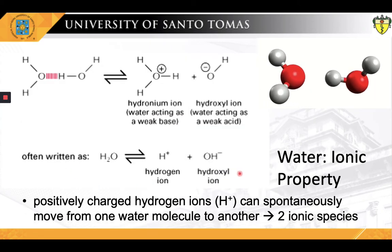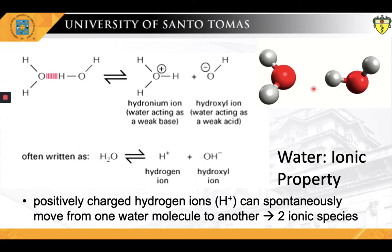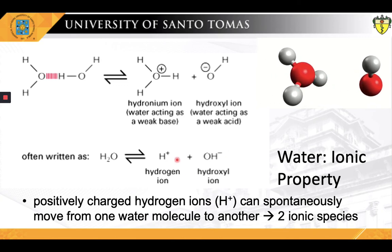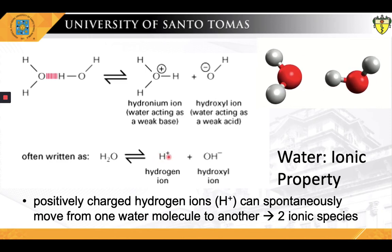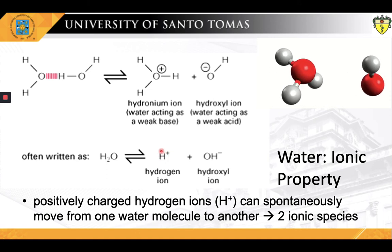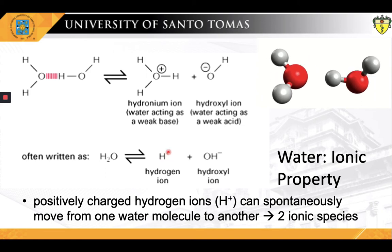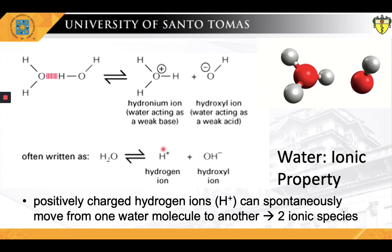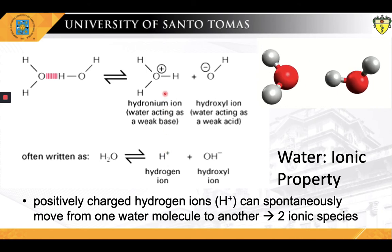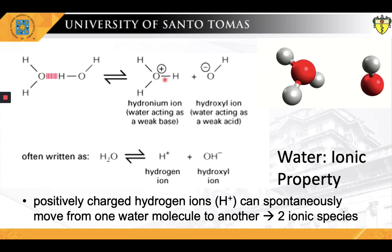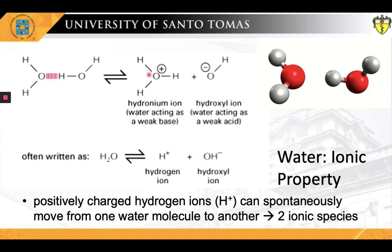One of the simplest kinds of chemical reaction, and one that has profound significance in cells, takes place when a molecule possessing a highly polar covalent bond between a hydrogen and a second atom dissolves in water. The hydrogen atom in such a molecule has largely given up its electron to the companion atom, and so exists as an almost naked positively charged hydrogen nucleus — in other words, an H+ ion, or simply a proton. When a polar molecule — in this case, a water molecule — becomes surrounded by water molecules, the proton is attracted to the partial negative charge on the oxygen atom of an adjacent water molecule. This can cause the proton to dissociate from its original partner and associate instead with the oxygen atom of the water molecule, generating a hydronium ion or H3O+.